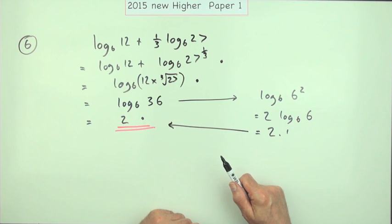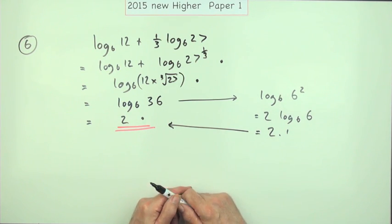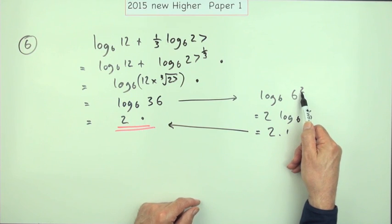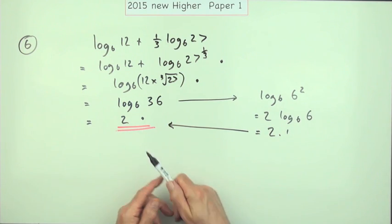Do that if you like—you're not going to get any marks for it. As long as you realize, as soon as you've come to this line and said, 'Well, what power of 6 is that? That's 2,' you've already got your answer, because that's what it means.